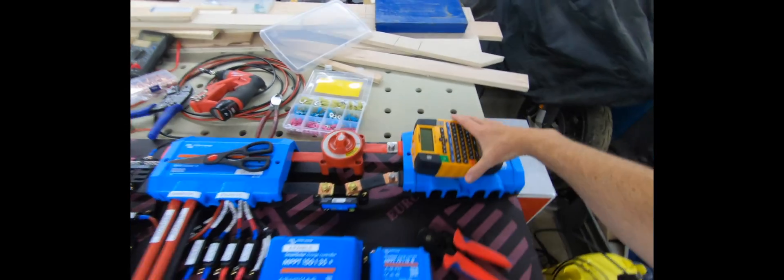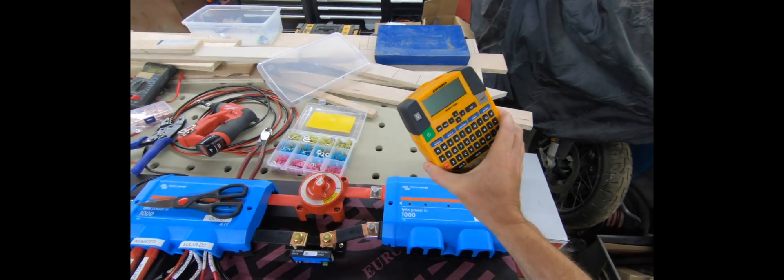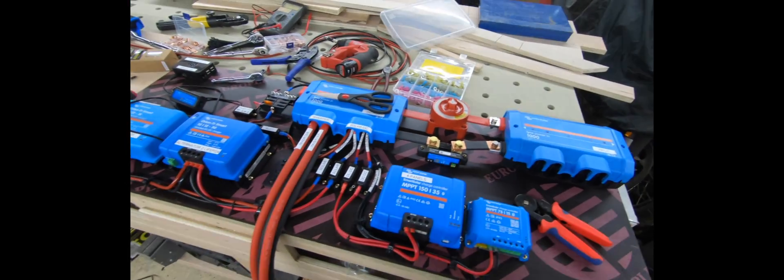So what we have is, these are brilliant by the way, that is a Dymo label maker that actually makes heat shrink that you can see on some of these. I will go through another video probably with the stuff that was used.